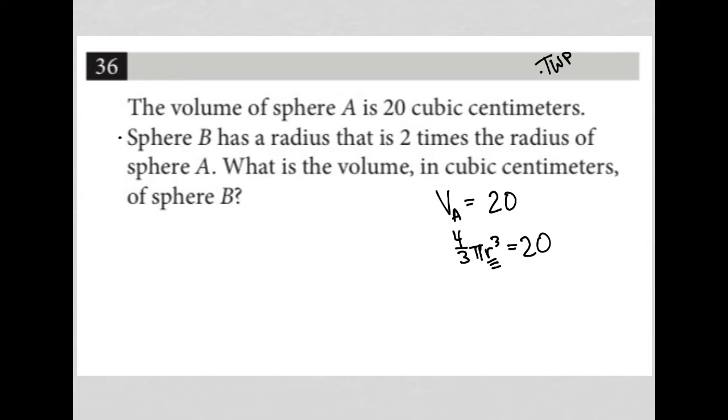So the next sentence here says sphere B has a radius that is two times the radius of sphere A. So this is why we're finding the radius of sphere A, so that we can then multiply it by two in order to have our radius of sphere B.